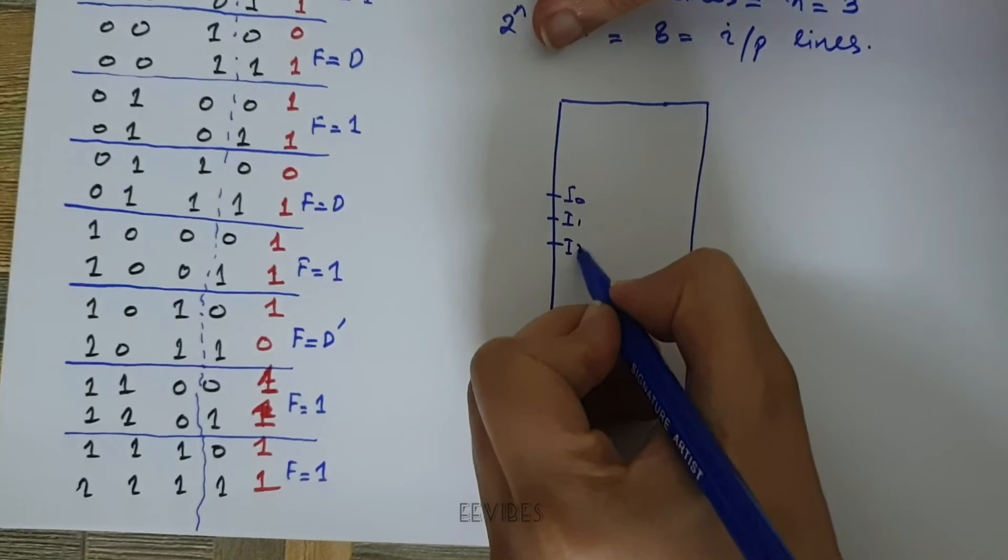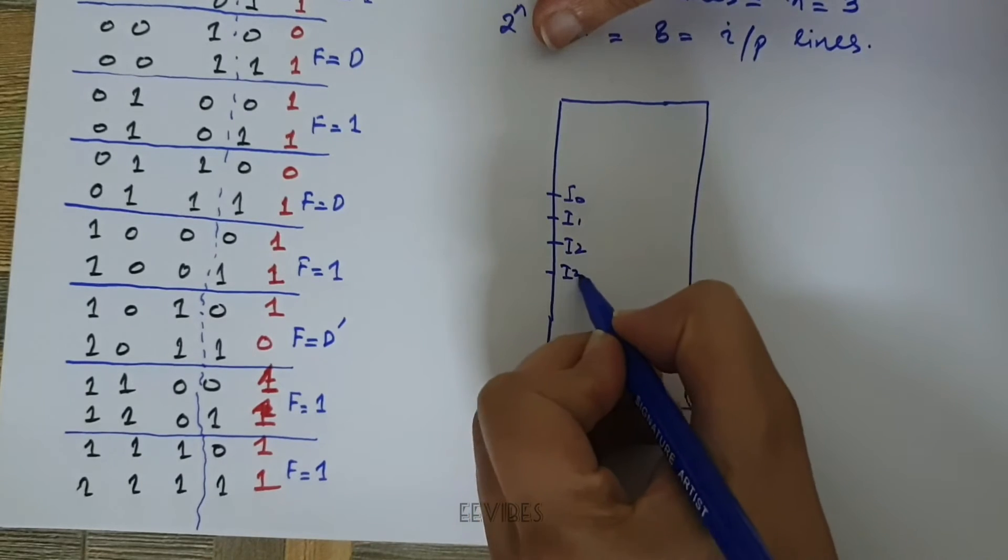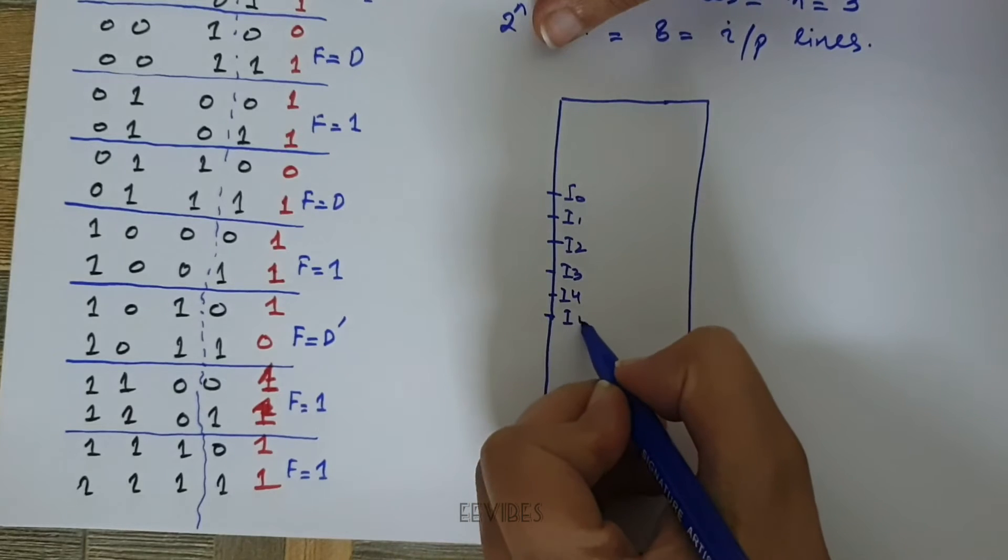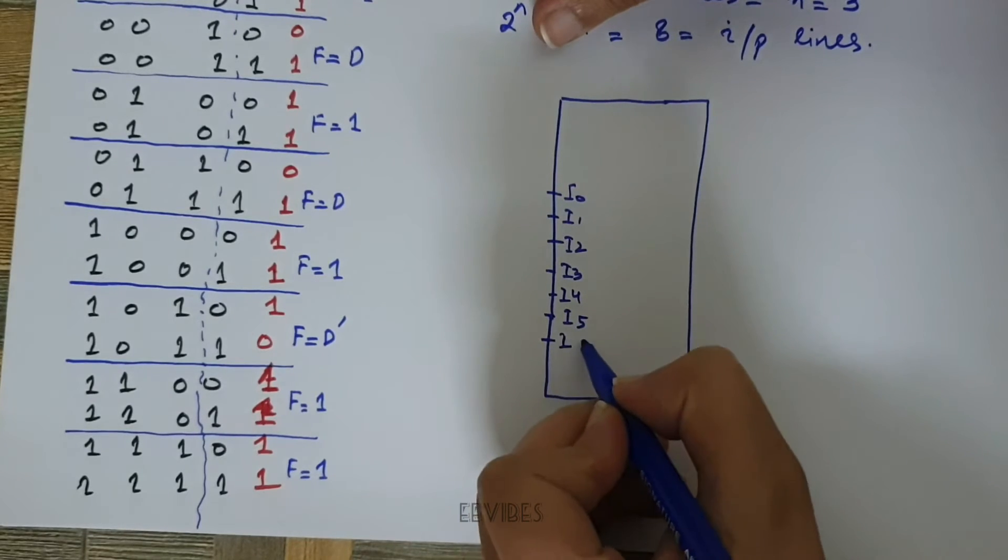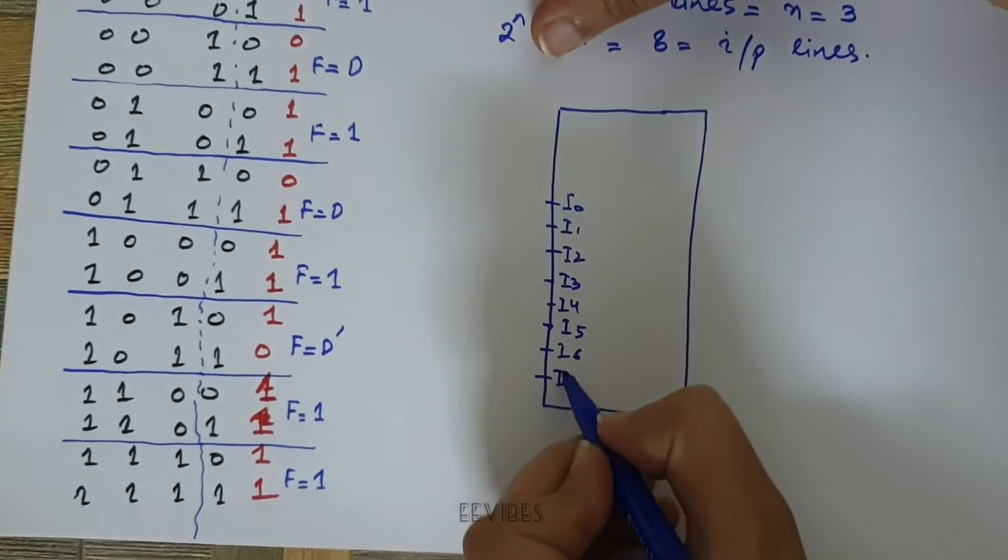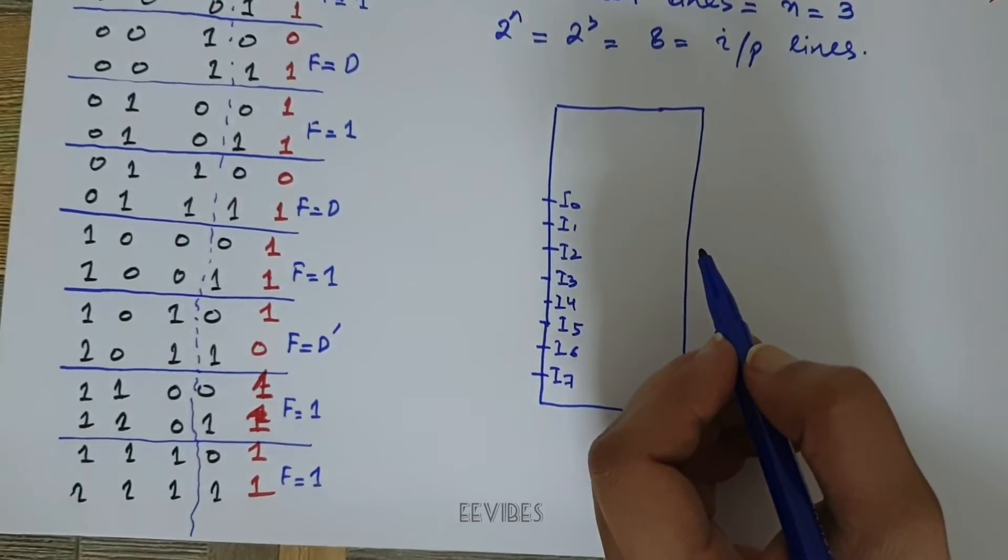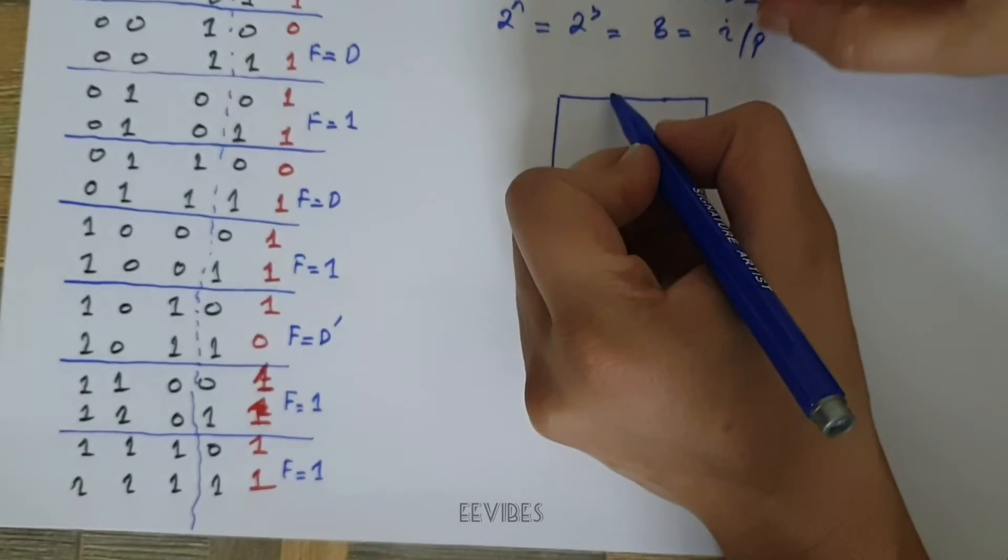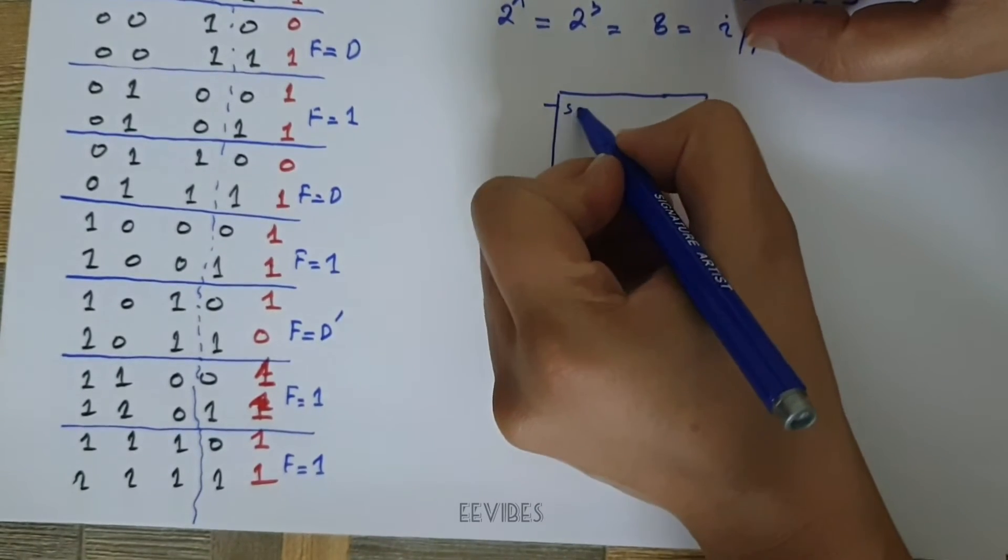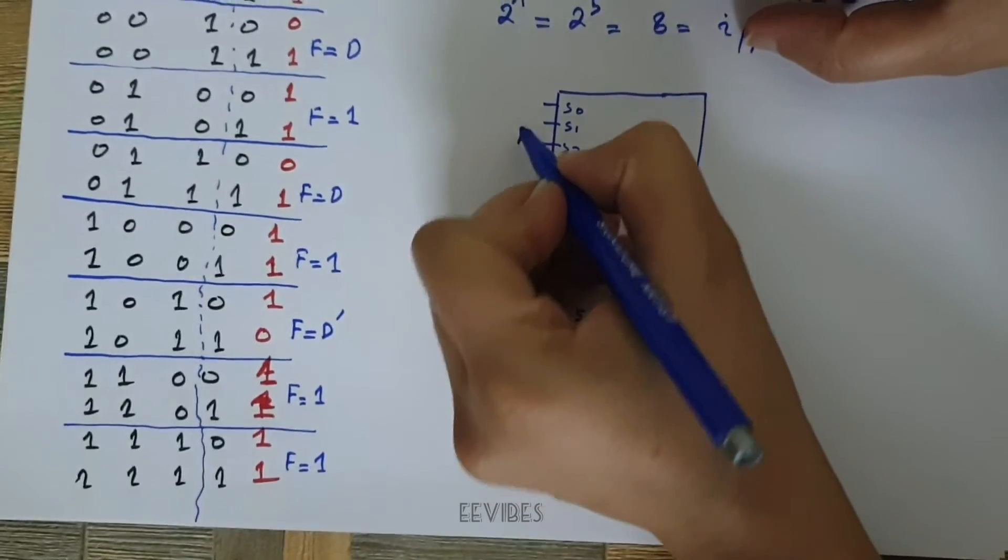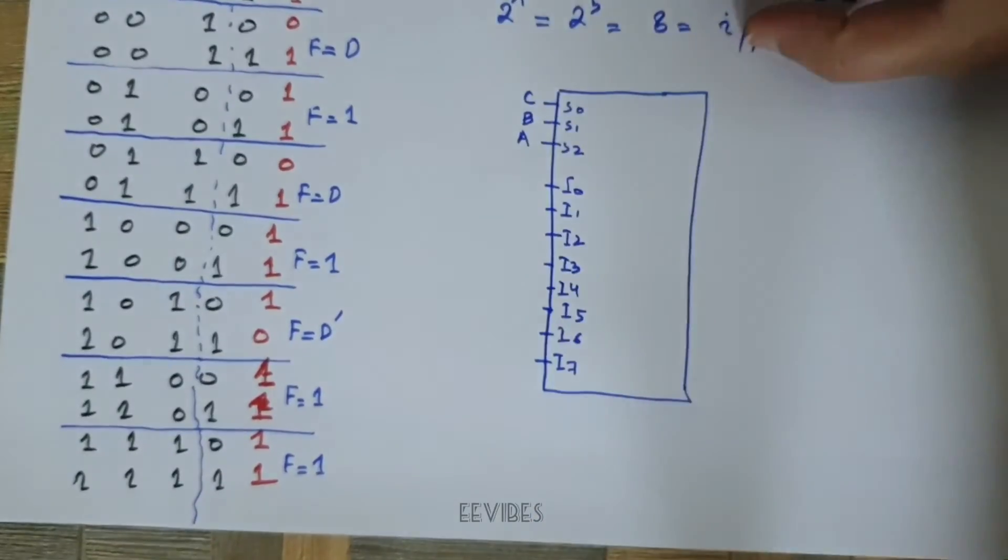I1, I2, I3, I4, I5, I6, and then I7. And then in the next step you will write select lines S0, S1, and S2, where you will mark A, B, and C right over here.